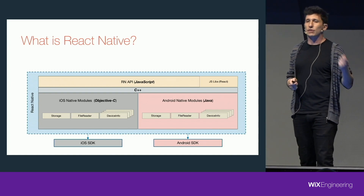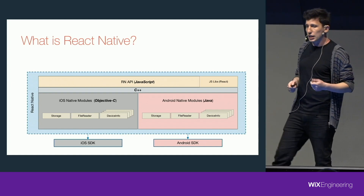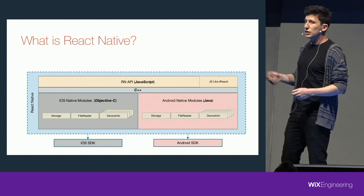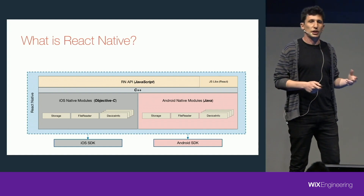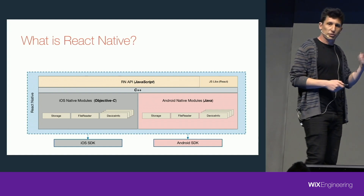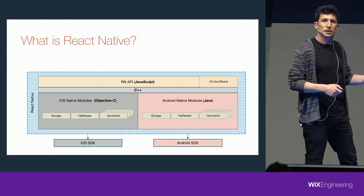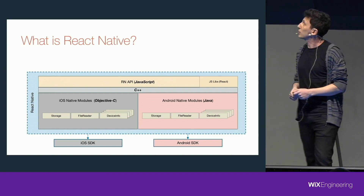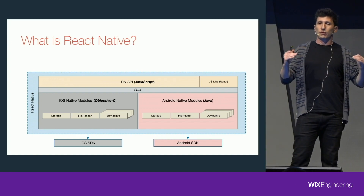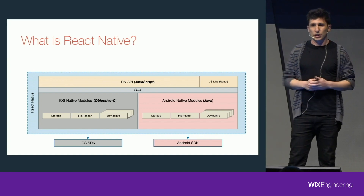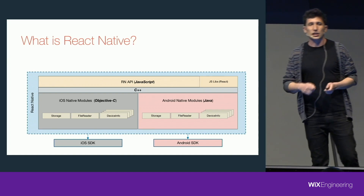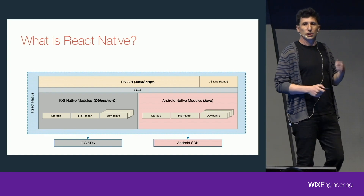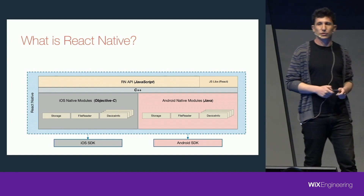For example, if we want to save something in the persistent storage of the mobile phone, we will use a native module that is saving something to the SQLite database inside the mobile phone. Above this layer, we have the JavaScript layer. This layer is exposing a unified API to the React Native developer.